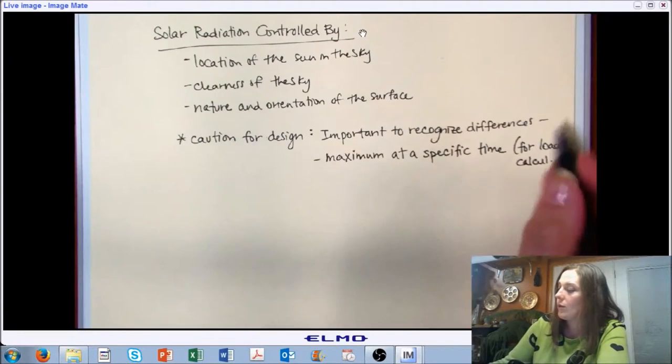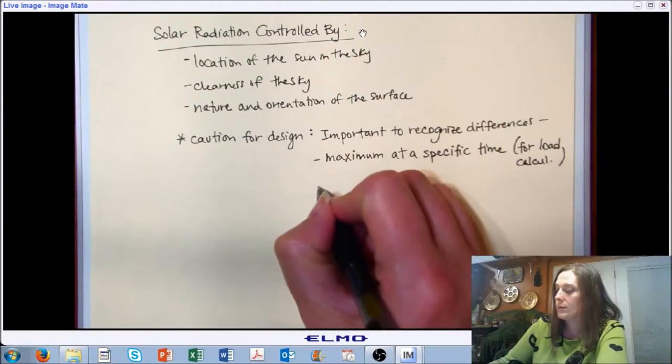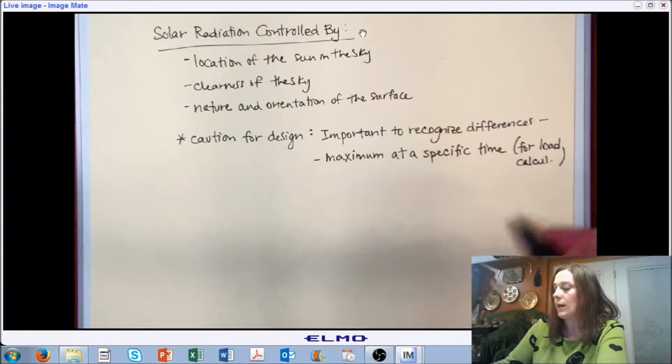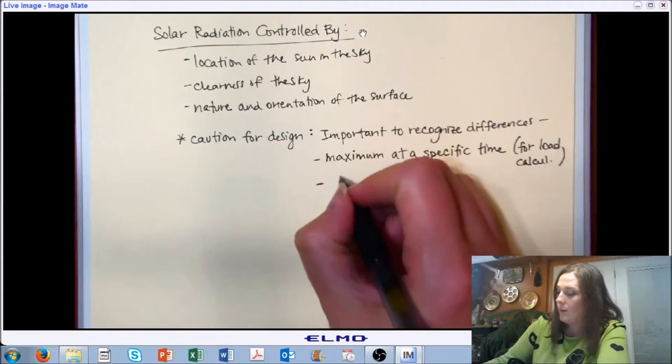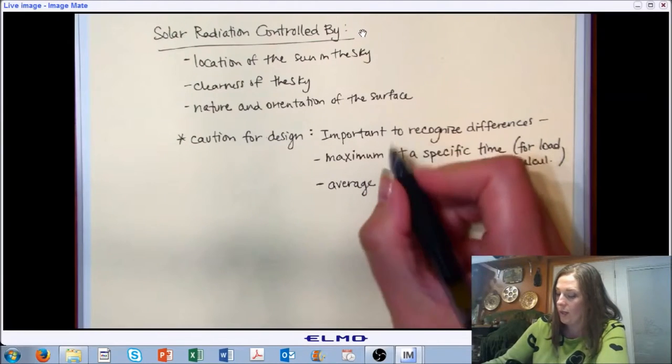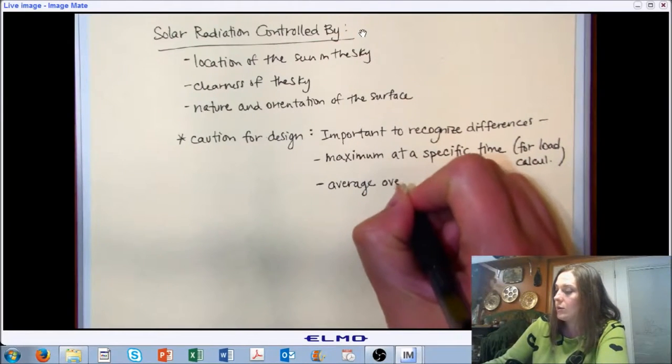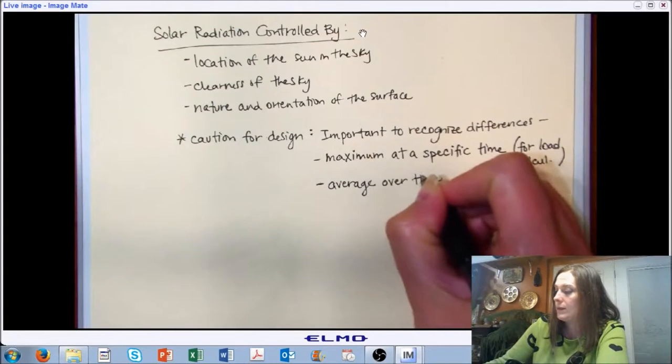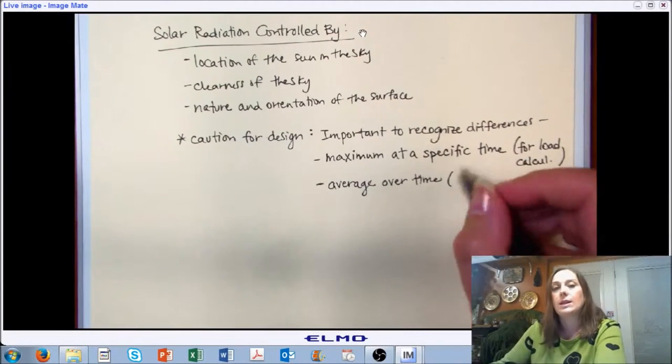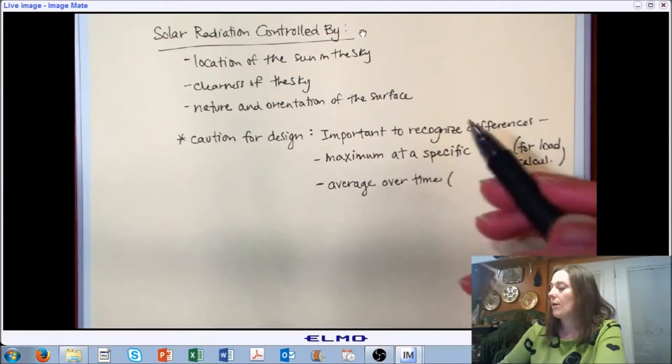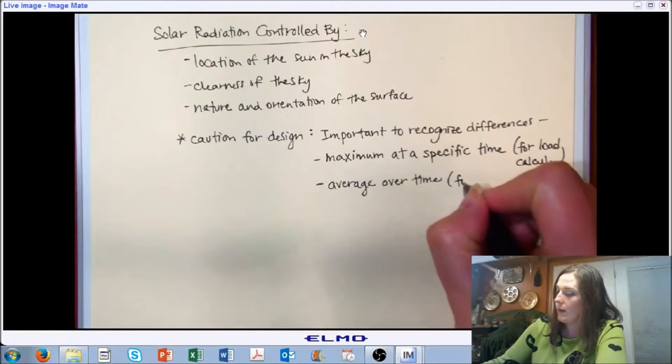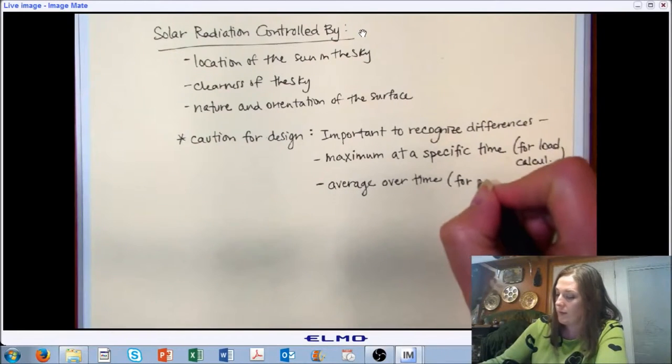For doing load calculations, you may be interested in maximums and minimums and amounts of solar radiation at specific times. But you could also look at an average or an integration, some sort of over time measure that's giving you an indication of essentially consistency, amount of radiation that you can expect for an extended period of time.